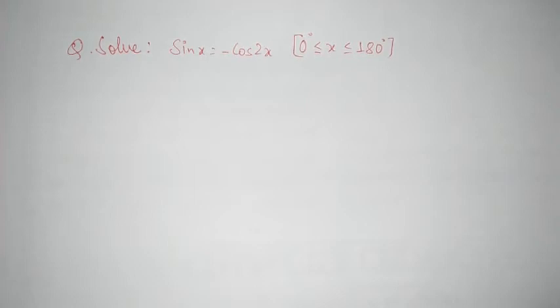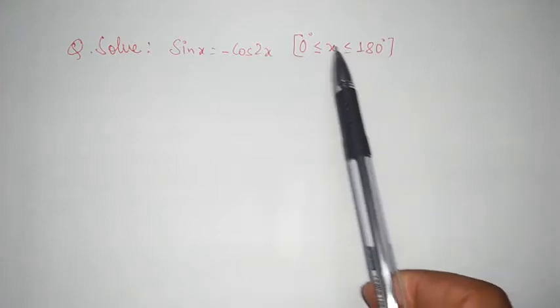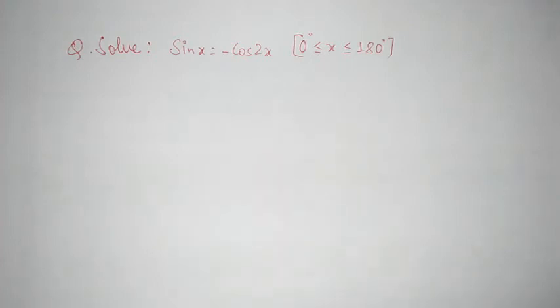Solve sin x equals minus cos 2x, where the value of x is greater than or equal to 0 degrees and less than or equal to 180 degrees. This equation is related to trigonometric equations.